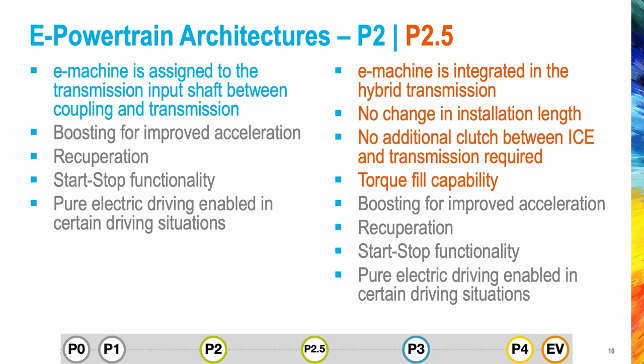The configuration is named P2 if the electric machine is side-attached through a belt or integrated between the internal combustion engine and the transmission, while if the e-machine is integrated in the hybrid transmission, the configuration is named P2.5. In both cases, the e-motor provides boosting for improved acceleration, recuperation, and start-stop functionality. Furthermore, pure electric driving is enabled in certain driving situations.